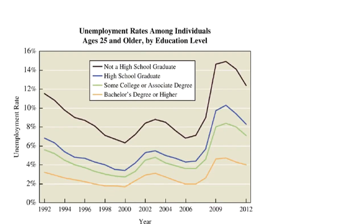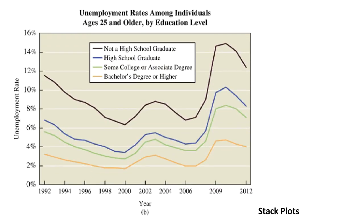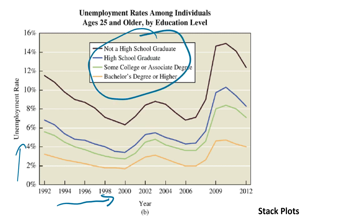Let's move on to a multiple line graph. This line graph shows the years on the x-axis and the unemployment rate on the y-axis. For each of these lines it shows where the unemployment rate is for any certain year, and the different colored lines correspond to how much education they have. Most of these lines — really all of them — follow that same general shape, but the big difference between them is the gaps in between them.